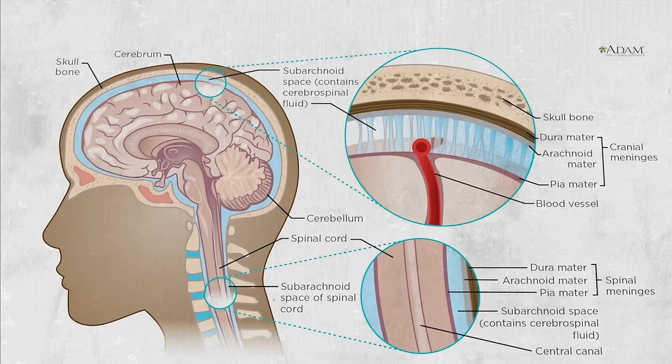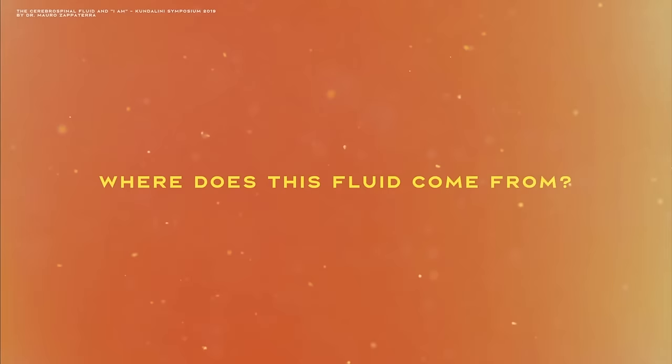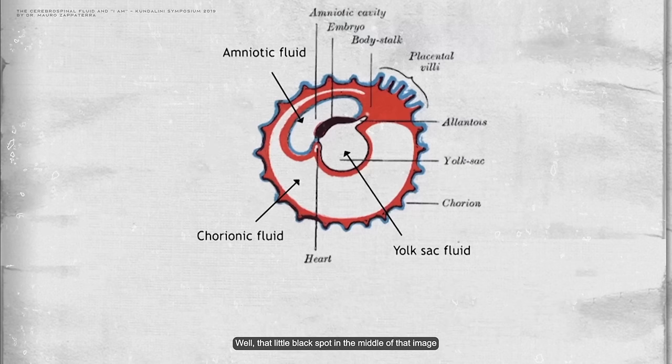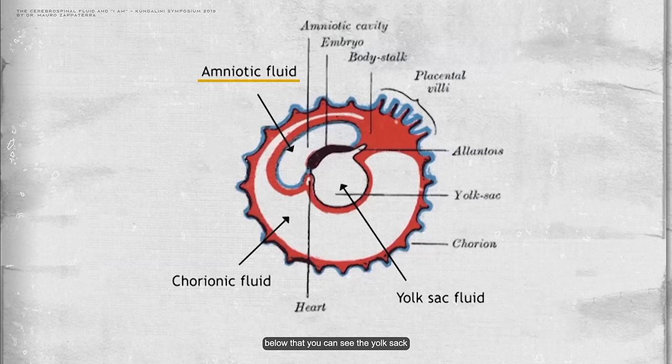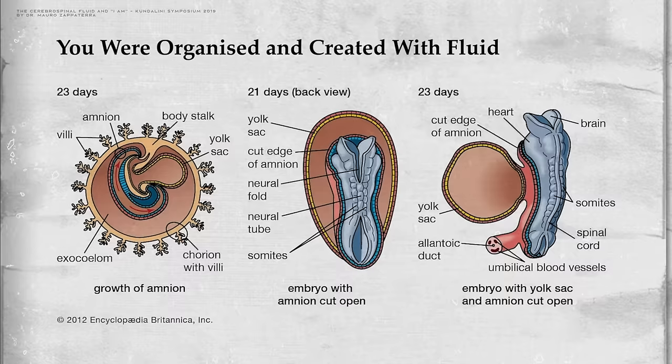There exists a central column of fluid aligned with the body's midline structure, providing this unique suspension and support. Where does this fluid come from? That little black spot in the middle of the image is you — as an embryo. You can see above the amniotic fluid, below the yolk sac, and all around it the chorionic fluid. Look at how you are essentially developing surrounded by fluid, enclosed in fluid, and totally supported by fluid. You are organized and created with fluid.